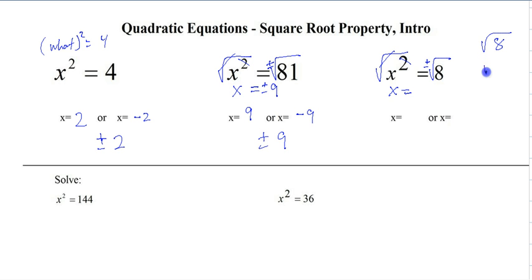So we have 8, which is 2 times 2 times 2. We take out our pair. And there we go. Plus or minus 2 radical 2. So we get 2 radical 2 or negative 2 radical 2.